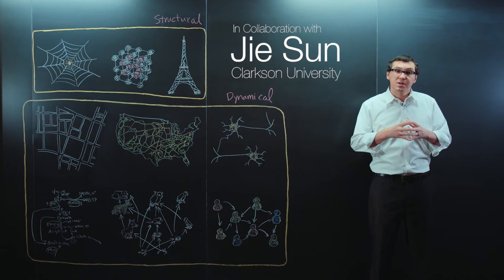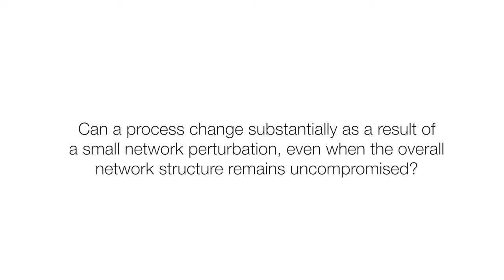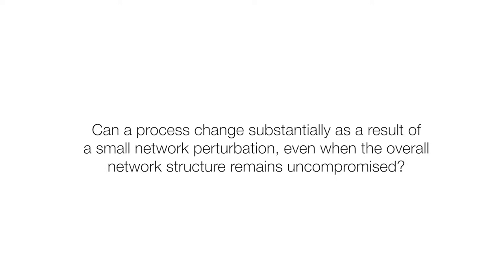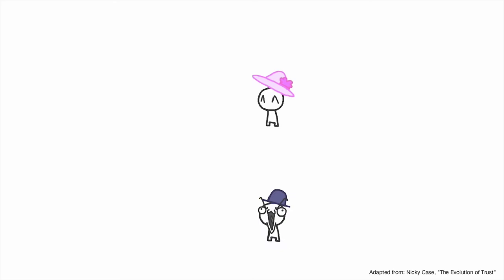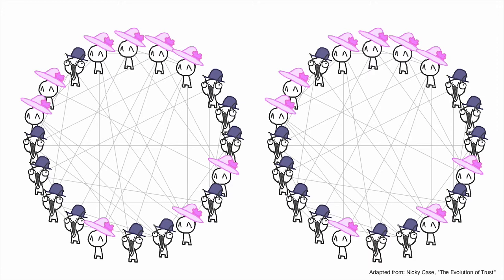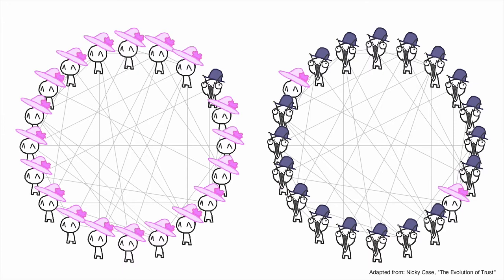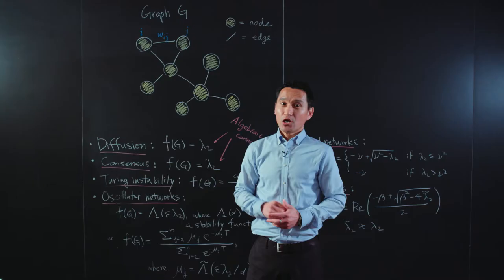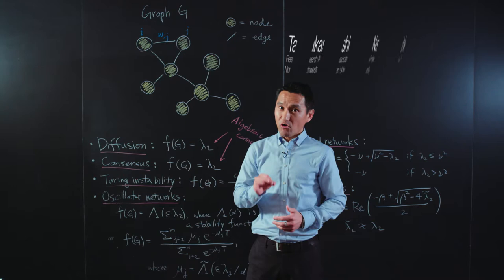We here at Northwestern University, and our collaborator G Sun at Clarkson University, have considered whether a process can change substantially as a result of a small network perturbation, even when the overall network structure remains uncompromised. For example, consider the evolution of cooperation in an iterated prisoner's dilemma game. Starting out with a mixed population of cooperators and defectors, the full population may eventually converge to cooperators only or defectors only, depending on a small change in the network.